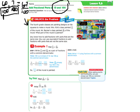The fourth grade classes are painting designs on the tile squares to make a mural. Ms. Kirk's class painted three tenths of the mural. Mr. Becker's class painted twenty one one hundredths of the mural. So what part of the mural is painted? So we know we're going to have to add these together, but they don't have the same denominator.